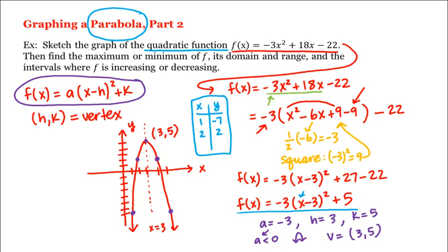We'll darken in the vertex. So here's the graph of our quadratic function, or our parabola. We're still asked to find the maximum or minimum value of f, its domain and range, and intervals of increase or decrease. Because this parabola opens downward, it will have a maximum, not a minimum, and the maximum occurs at the vertex.